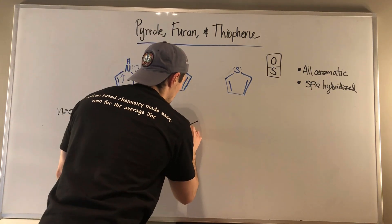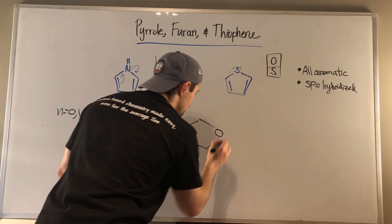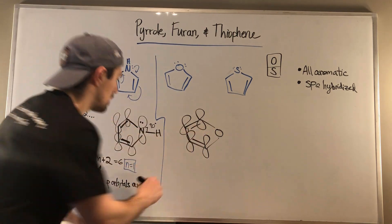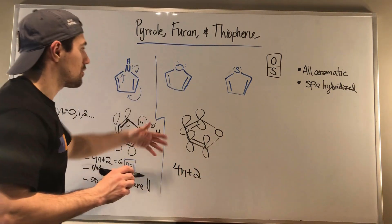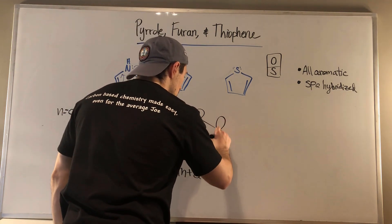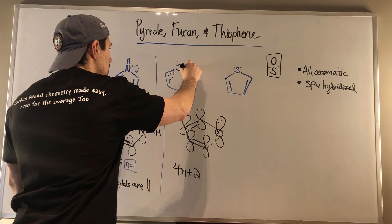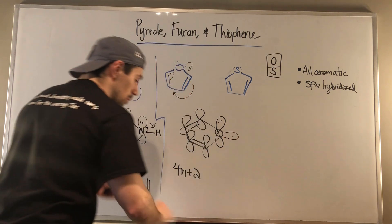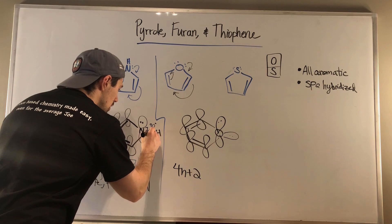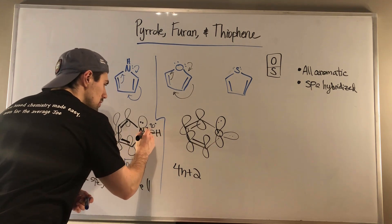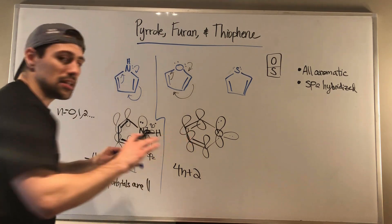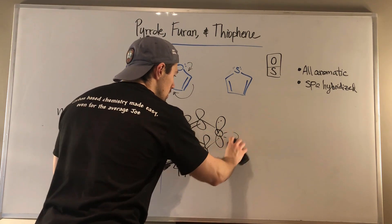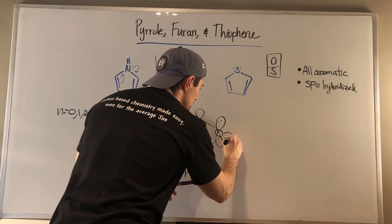I'm going to draw furan from a side view. We've got these p-orbitals going. Oxygen — there are only 4 electrons. We need 4n+2. Oxygen realizes that if it contributes one of its two lone pairs, we're in business — it tosses them into a p-orbital because of the resonance going on. What does it do with the extra? It wants it to stay out of the way. What I forgot to mention is that the orbital overlapping from the nitrogen side — that orbital — is an sp2 orbital, not a p orbital, just one of the regular hybrid orbitals.